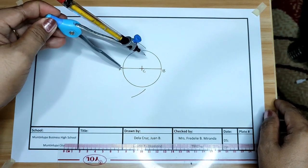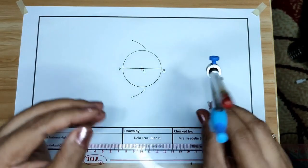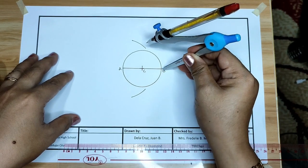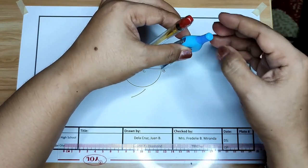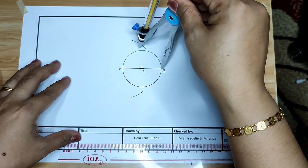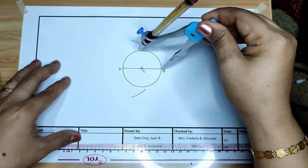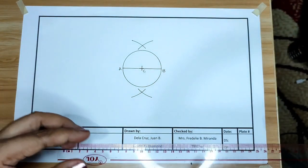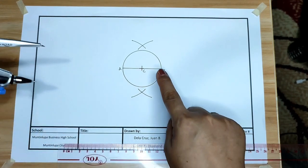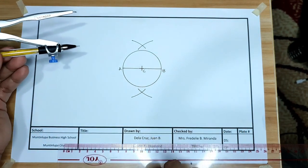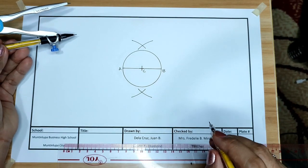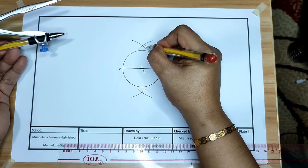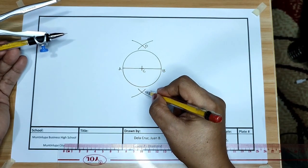Do not adjust your compass anymore. Set your compass at point B. Then draw an arc on the upper portion and on the lower portion. Have you seen an intersection of two lines? Let us name this point D and point E.